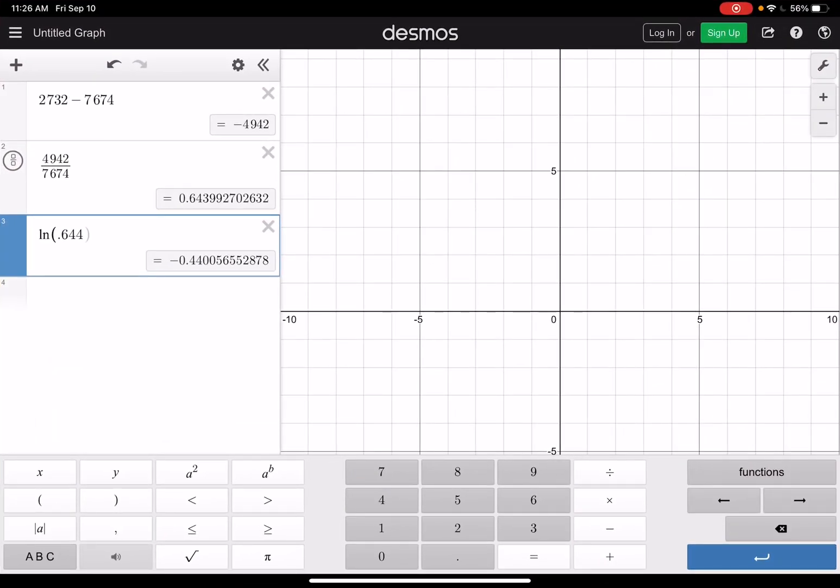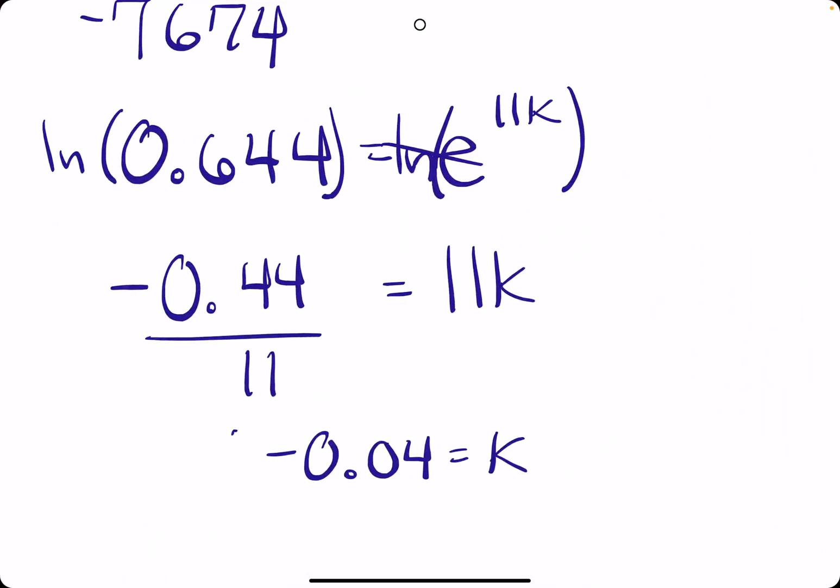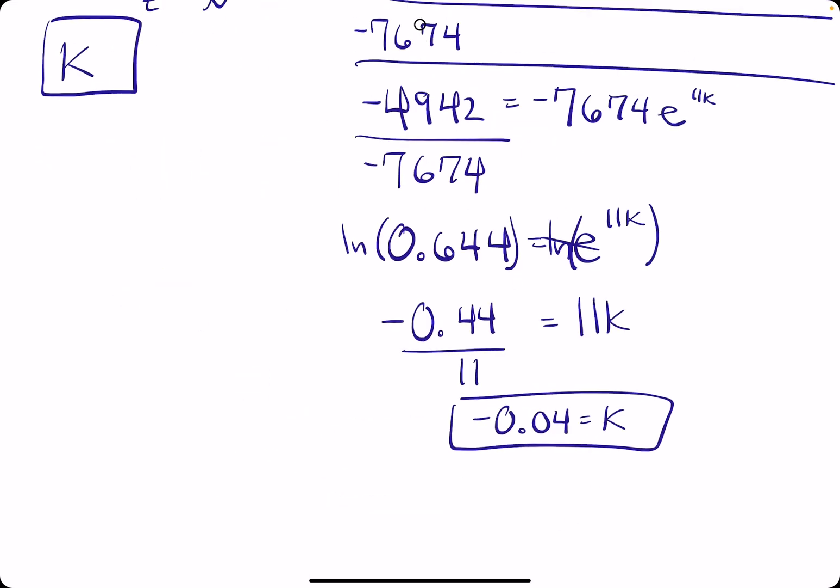I'll double-check that though. We divide by 11 and get negative 0.04. That checks out. We have our K value, and we're so close to being done.